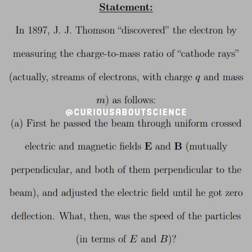So the statement reads, in 1897, J.J. Thomson discovered the electron by measuring the charge to mass ratio of cathode rays, actually streams of electrons with charge Q and mass M, as follows.